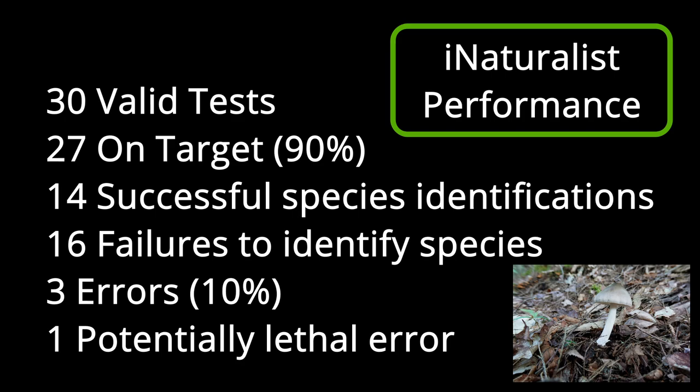The other major error which the application made was also with another Amanita, which it mistook for an Agaricus mushroom. It did not identify it down to species, but no matter how many photos I took of that fungus, it only interpreted it as an Agaricus mushroom. The Agaricus are a friendly family of basidiomycete mushrooms which have many edible varieties, indeed choice varieties, and the poisonous ones among them typically won't kill a person. Many new mushroom foragers avidly look for Agaricus fungi. Thus, it is of great concern that the application misidentified an Amanita — a fungal genus with so many absolutely deadly members — for an Agaricus mushroom.